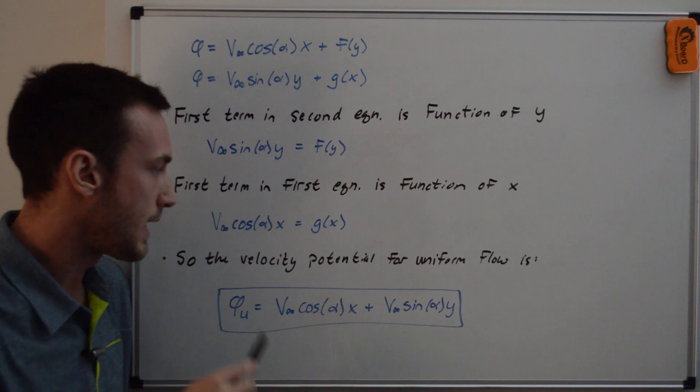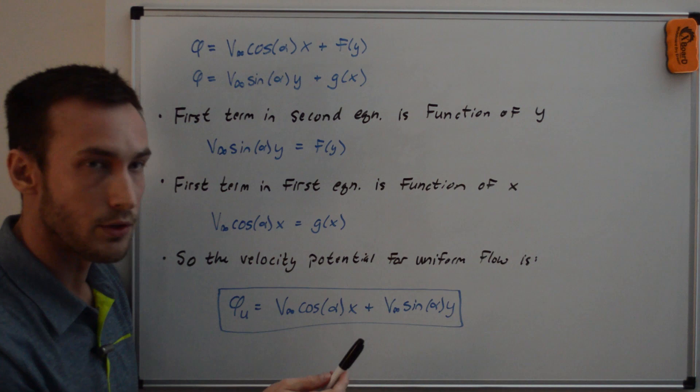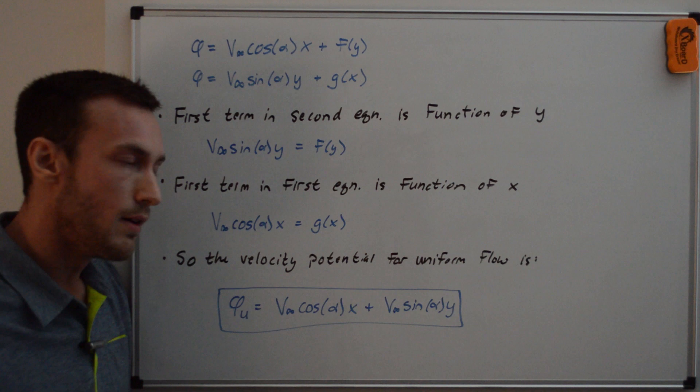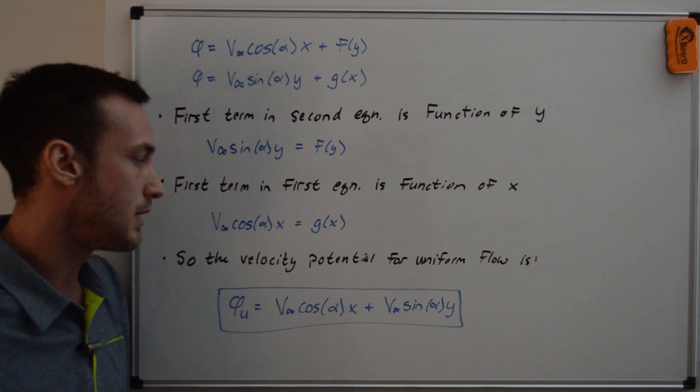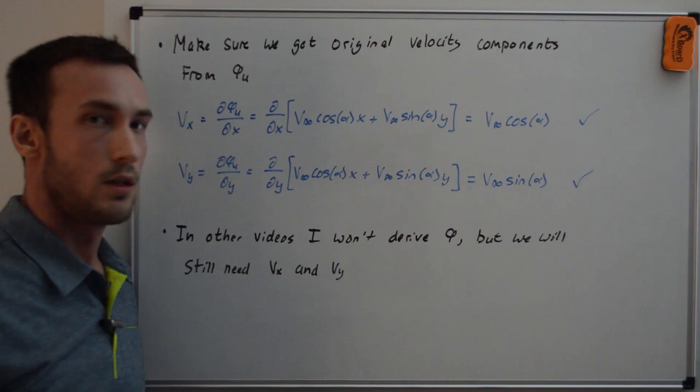Something that might be slightly confusing is when you're looking at this velocity potential for uniform flow, you'll note that it's not uniform, it depends on where you are in space on the x and the y coordinate. But the velocity from this uniform velocity potential is constant in space, does not depend on x and y. As we saw from before, our velocity components vx and vy were only dependent on v infinity and alpha.